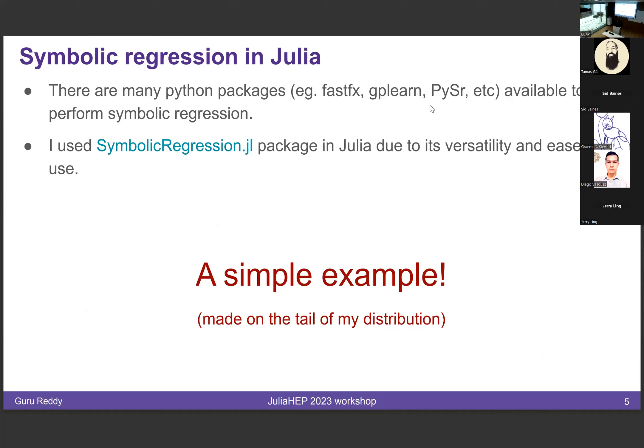Coming to symbolic regression in Julia — when I started doing my analysis, I started with a piecewise function to fit my samples. The problem was that there were too many parameters, and with every different shape I needed to vary the parameters. Sometimes if the initial parameters weren't proper, the fit flattened out and did not fit properly. Before coming across this Julia package, I was looking at Python packages like fastsr, gp-learn, and PySR, and I played sometime with Mathematica as well, but they were tedious to work with.